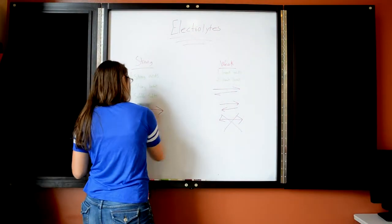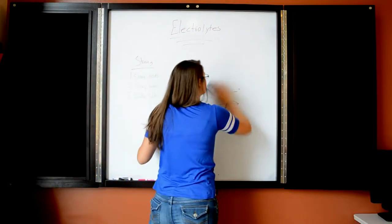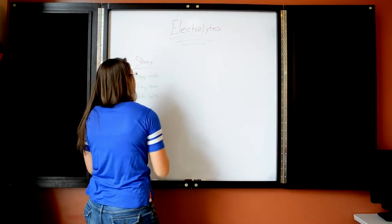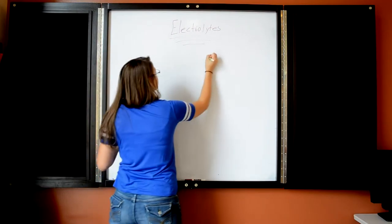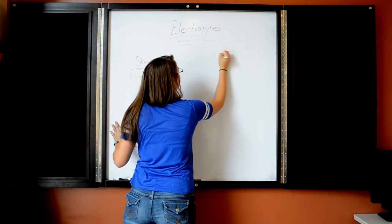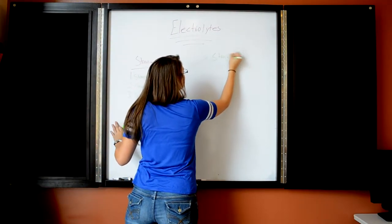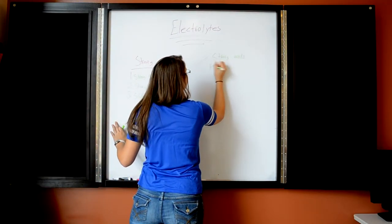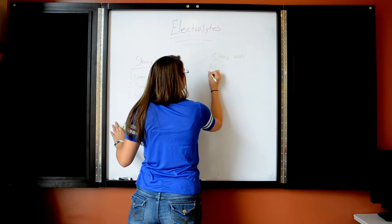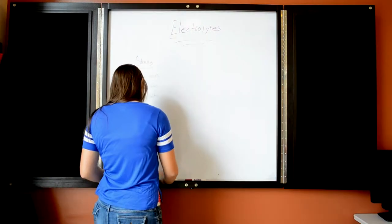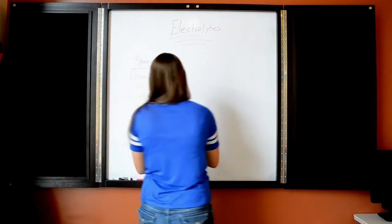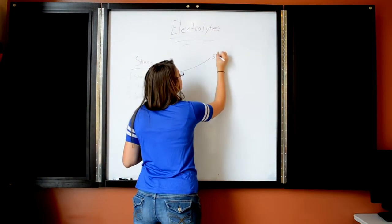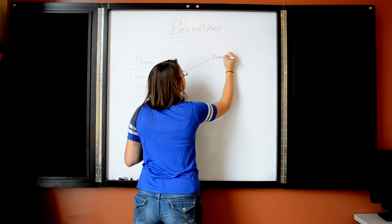Strong electrolytes completely dissolve in water — they will always dissolve and always conduct electricity. Strong electrolytes are strong acids, strong bases, and soluble salts. Just remember the three S's: strong acids, strong bases, and soluble salts.